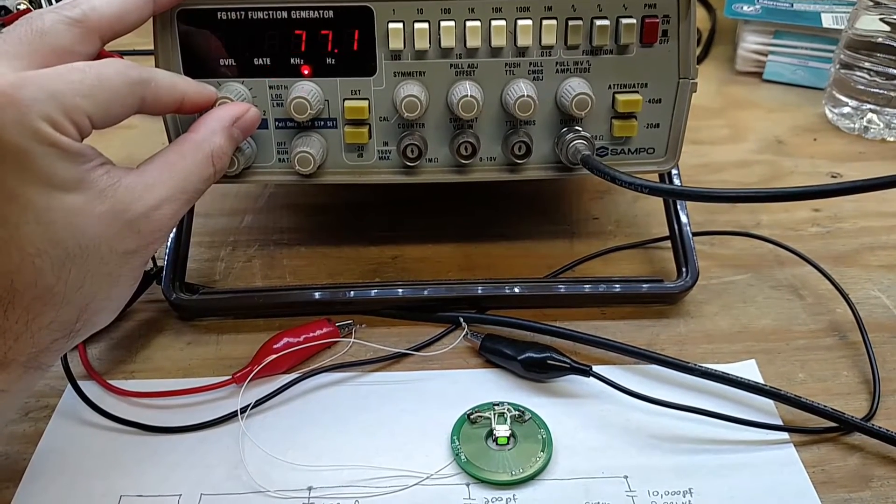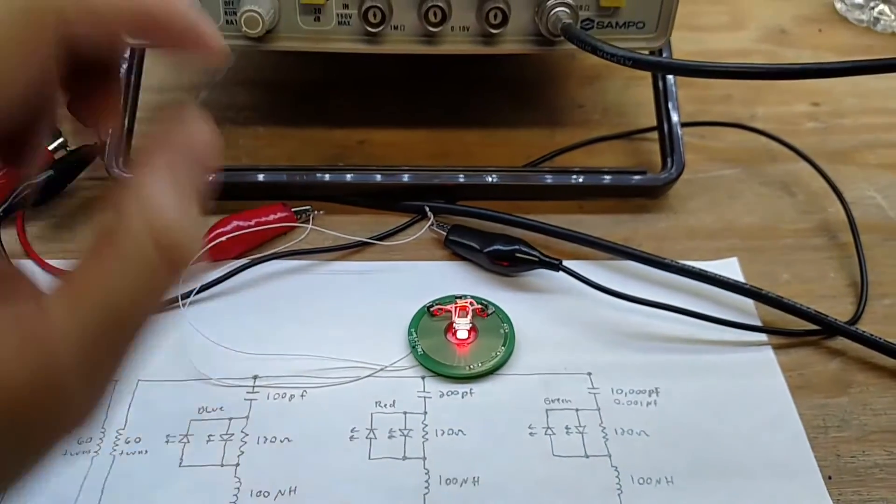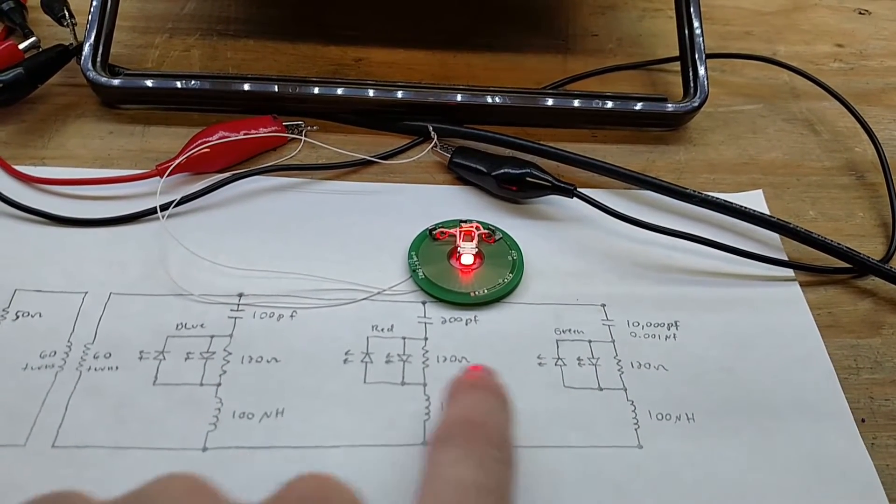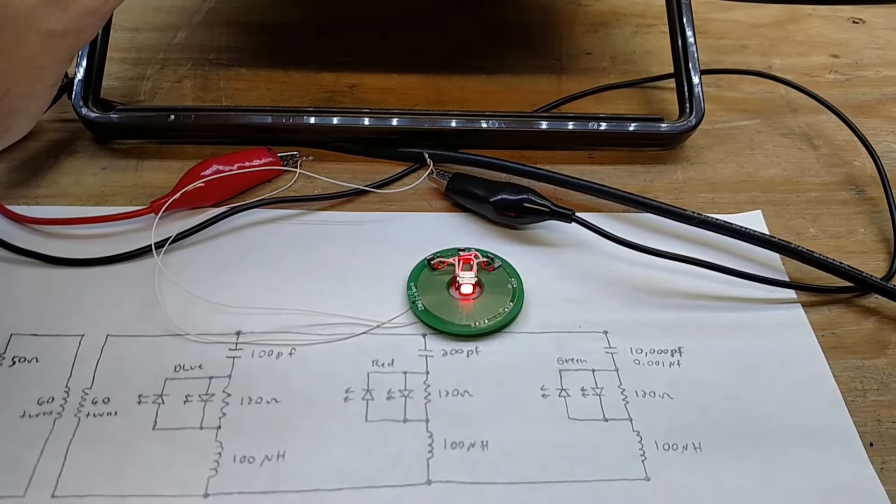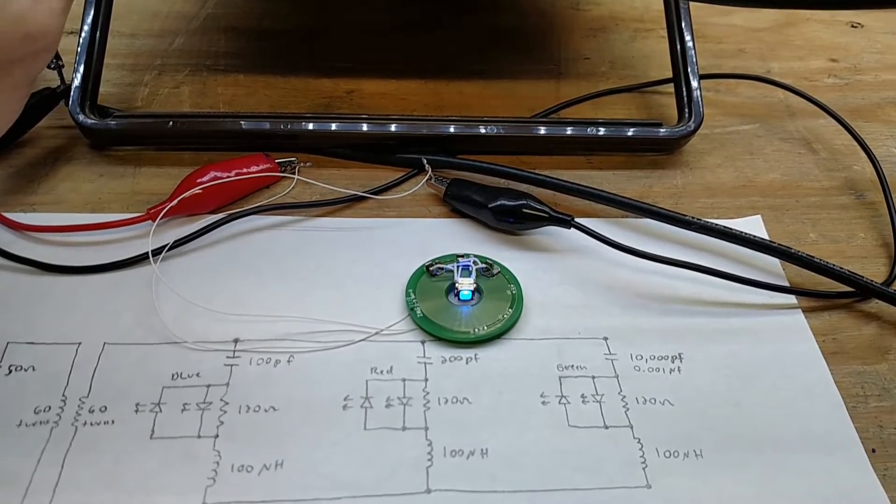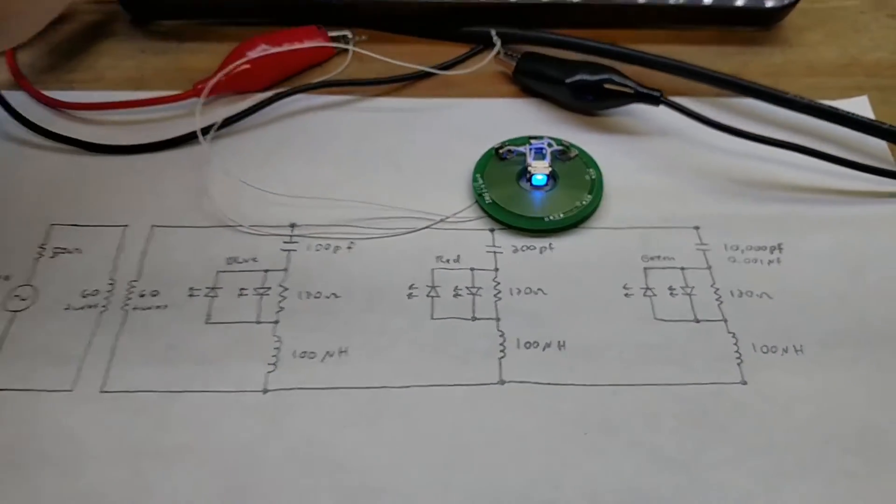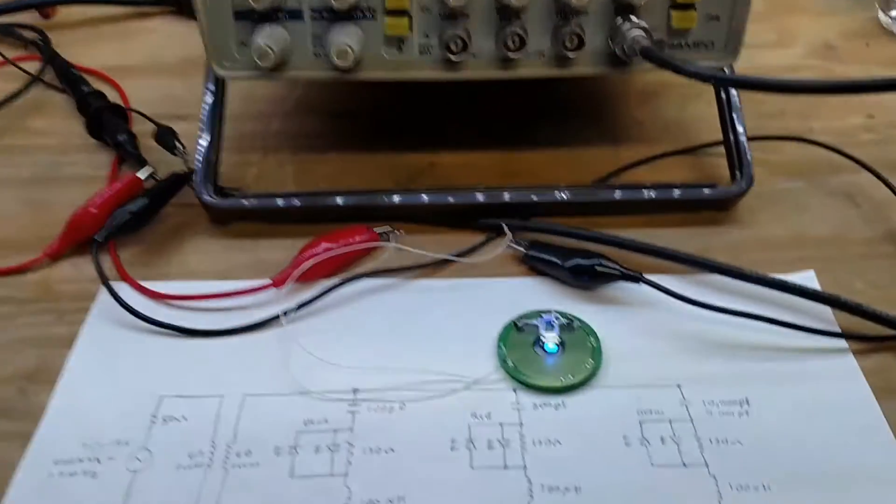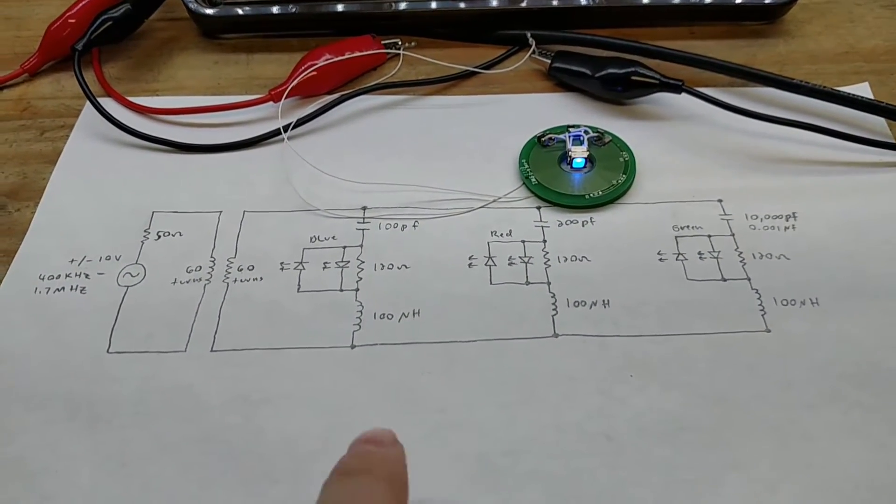If I were to redo this, I would probably swap the blue and the green and put the green up at the high frequency, because your eye is really sensitive to green but not very sensitive to blue. That would give you more dynamic range in the blue and less in the green. The blue looks okay, it's just not as bright. I would swap these two.